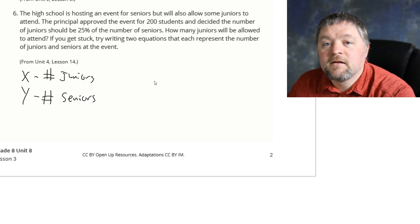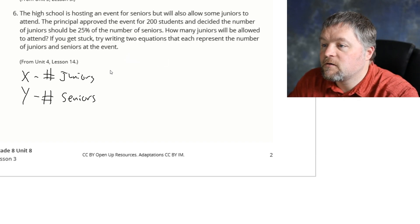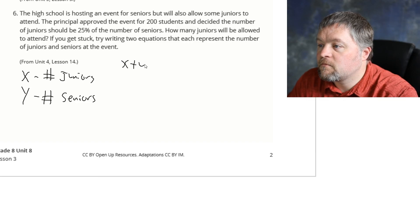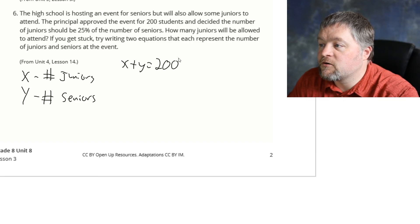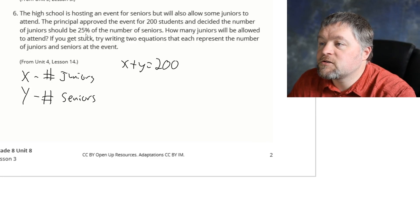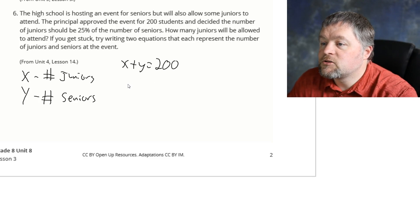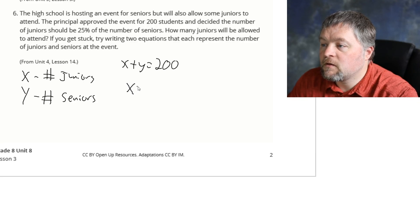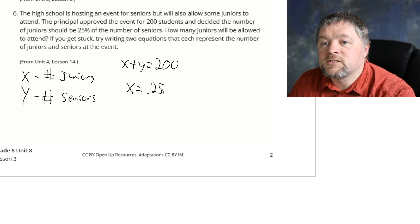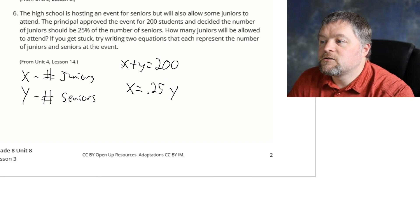So now we're going to need multiple equations. We know the total number of people for the event is 200. That means the number of juniors plus the number of seniors is equal to 200 students. We also know the number of juniors should be 25% of the number of seniors. So the number of juniors is equal to 25%, which is 0.25 or 1 fourth of the number of seniors. So now we have two equations. One of them is already solved for a variable.